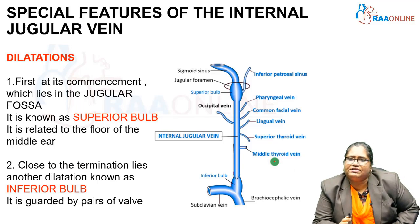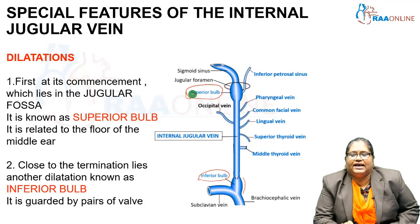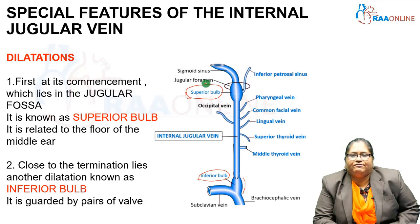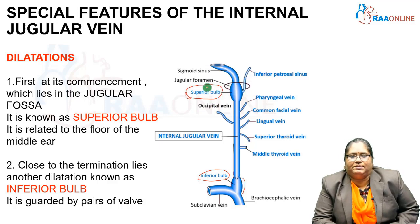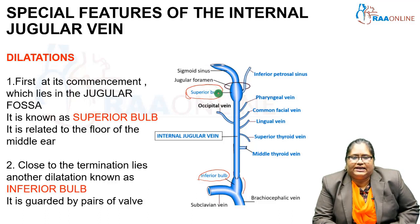A special feature of the internal jugular vein is that it has two dilatations: the superior bulb and the inferior bulb. The superior bulb is found at its commencement, lying in the jugular fossa, and it is related to the floor of the middle ear — this is an important clinical point.